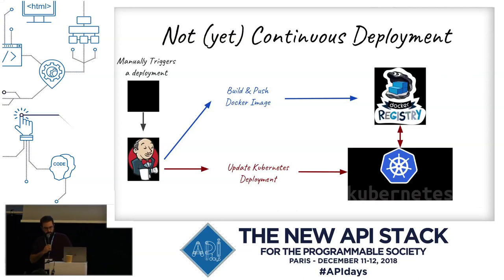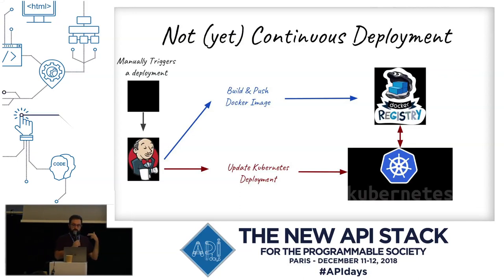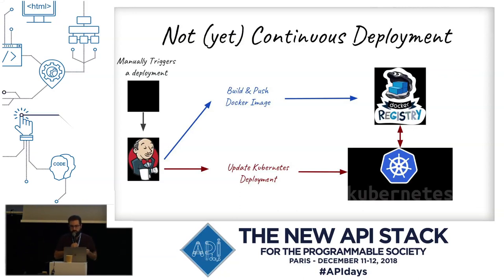This was still not continuous deployment — we still used Jenkins with manual deployment triggers. What Jenkins did was build and push the Docker image to a Docker registry, then make a call to Kubernetes telling it to update the deployment using the new image version. Kubernetes would fetch the image from the registry and update the deployment. With three instances per service, you can configure Kubernetes to fetch a new version, start a new container, and when it's ready terminate another — giving you a rolling upgrade really easily.